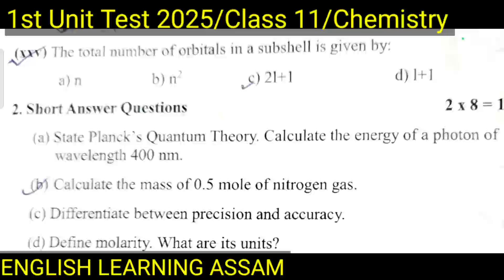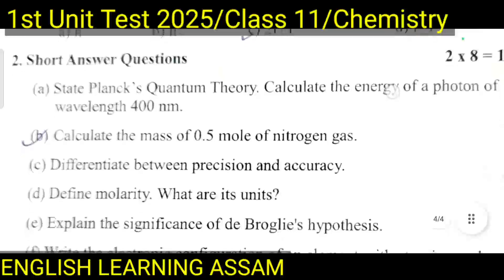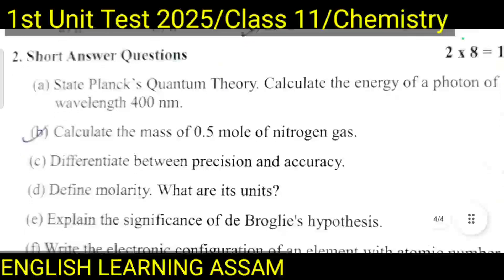Question number twenty-five: The total number of orbitals in a subshell is given by — A. n, B. n², C. 2l+1, D. l+1. The correct option is C — 2l+1. This completes the MCQ section. Number two is short question answer with 8 questions.